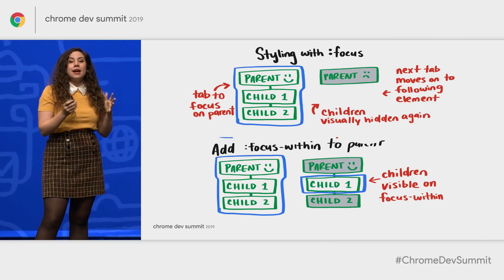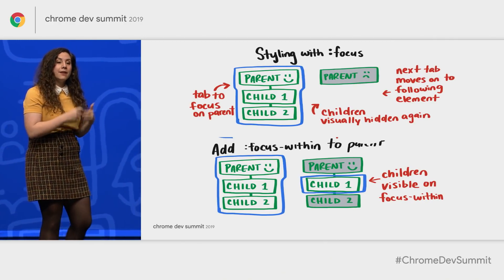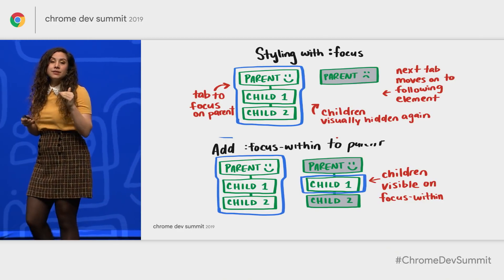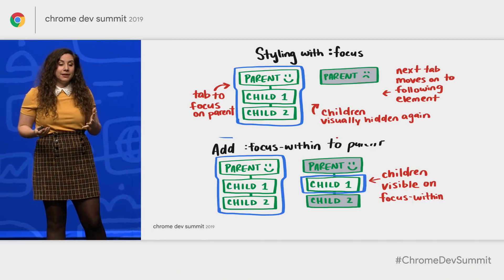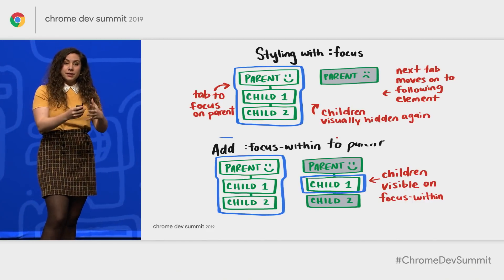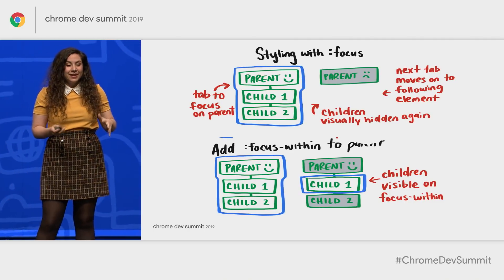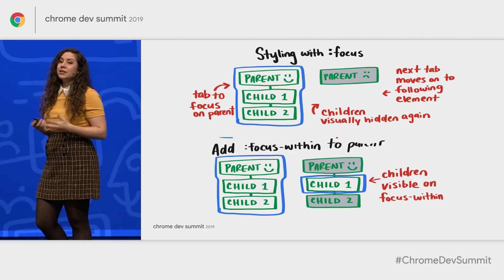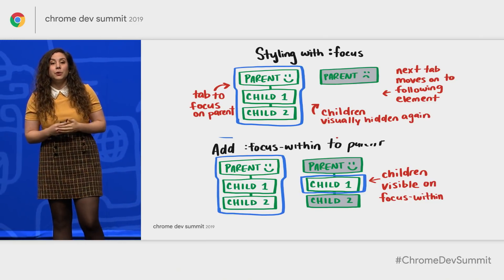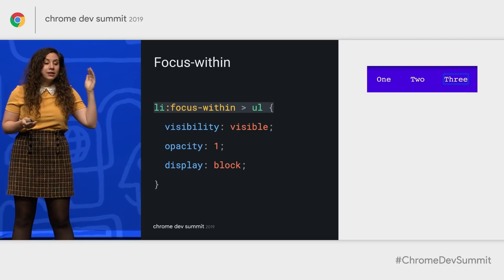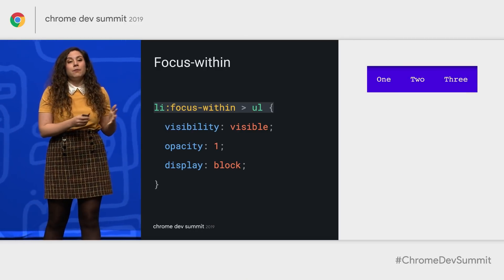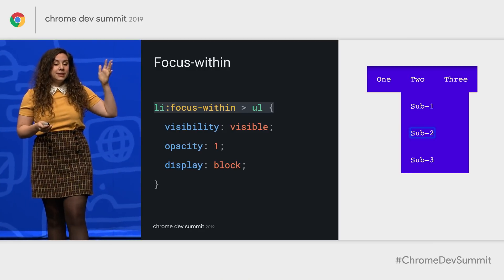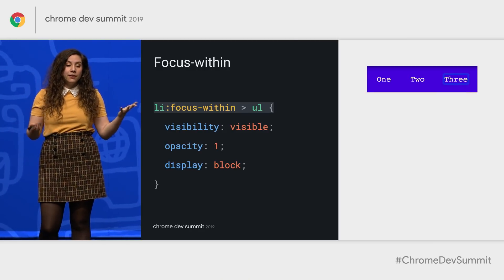The problem is: when you style with focus and you're tabbing into the parent using that focus style, you will have those children visibly appear. But when you tab to the next tabbable elements, they disappear because we're no longer focusing on the parent — you lose that style. Now, if you use focus-within, it solves those problems because you're telling the browser to apply that style when you're focusing within a parent's element. All we have to do is swap focus to focus-within, and we've solved that accessibility problem.